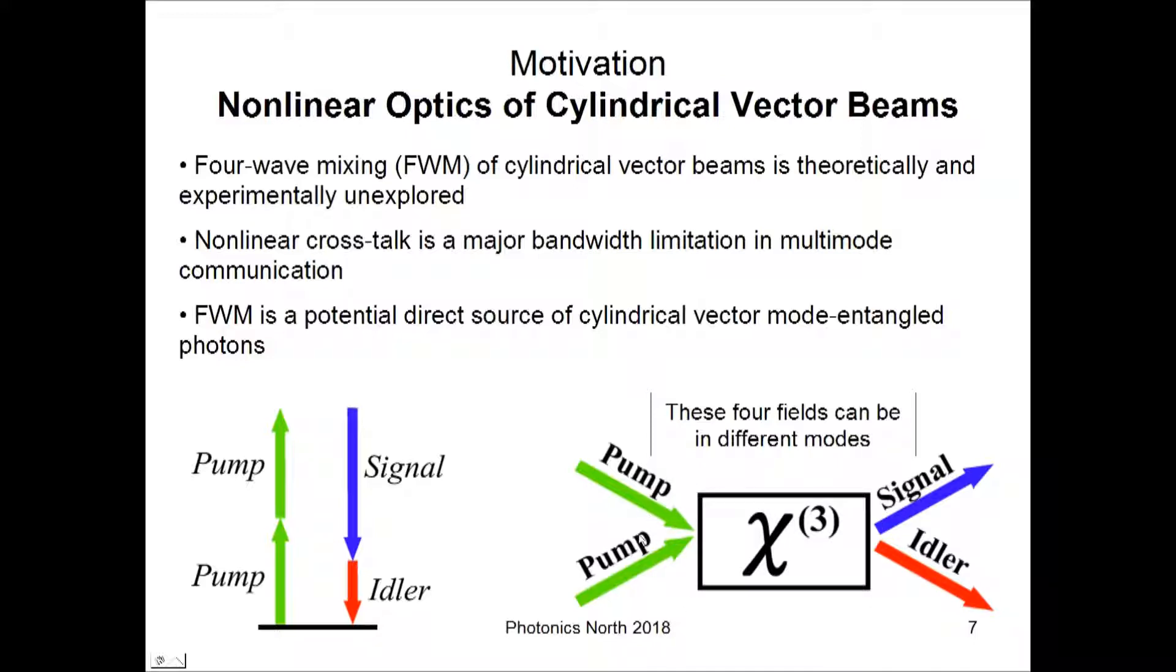The main question that's being asked here is, if you have pump beams in a certain spatial mode, and in this case, a CV mode, say the radial mode, what modes can come out as the signal and idler mode? Can you have a conversion from one type of mode to another? Can the signal and idler have different modes if the two pumps are the same?